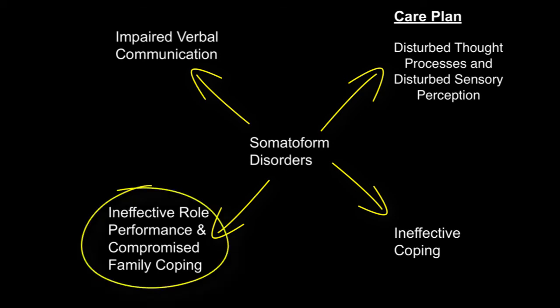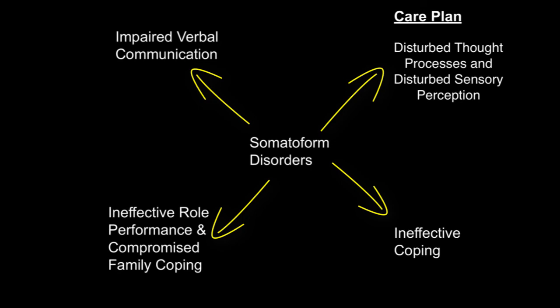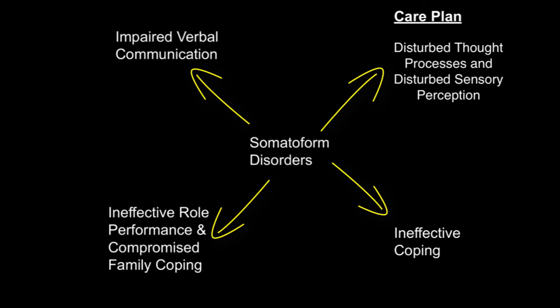For ineffective role performance and compromised family coping, educate the family and patient about the disorder, stressing the importance of avoiding unnecessary surgical or medical procedures. Encourage independent functioning and reduce the possibility of secondary gain by not focusing on the physical symptom. Assume a matter-of-fact, supportive attitude with the optimistic expectation that the patient will regain functional abilities in work, family, and social roles. For ineffective coping, the goal is to help the patient express their conflicts verbally rather than acting them out through symptomatic behaviors. The goal of long-term or insight therapy is to promote effective emotional expression by exploring the sources of anxiety. Supportive therapy seeks to improve self-esteem, perhaps through measures such as expanding the patient's interest in their environment. Avoid reinforcing the patient's symptoms. Ignore the symptom, but never the patient. Concentrating on the symptom gives it more importance than it merits, thus increasing the secondary gain associated with it.